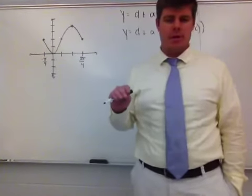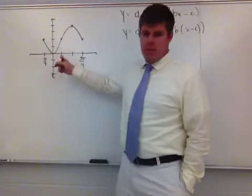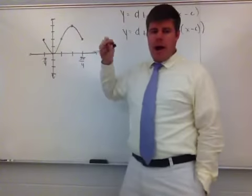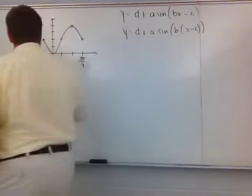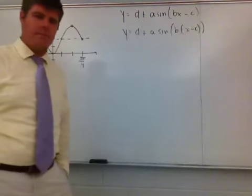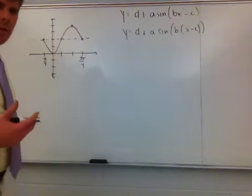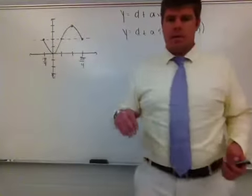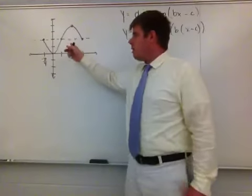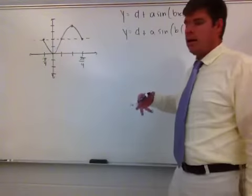Amplitude is a measurement of halfway between the maximum and minimum values. The minimum for this function is 0 and the maximum is 4, so halfway between 0 and 4 is 2. That value of 2 is where the amplitude is measured from. So this function has an amplitude of 2, and by finding that midpoint I've also determined the vertical shift.